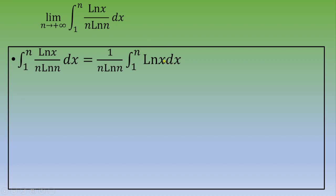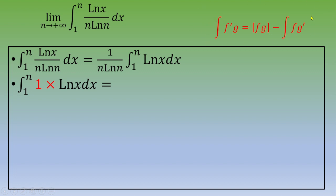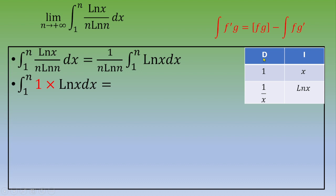Now we need to calculate the antiderivative of ln(x). The trick is to write ln(x) as 1·ln(x), so we have a product. We can then perform integration by parts. Using the standard formula, we set up a table: the derivative column gives 1 (integrating to x), and ln(x) differentiates to 1/x.